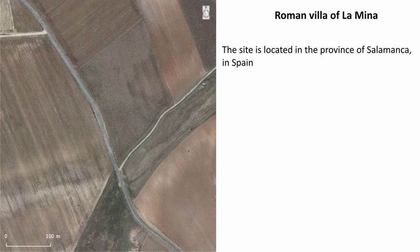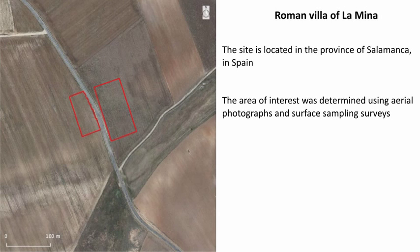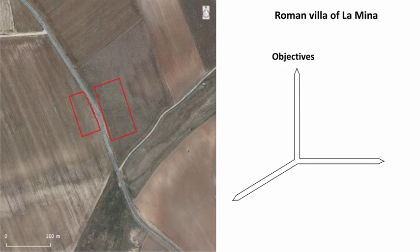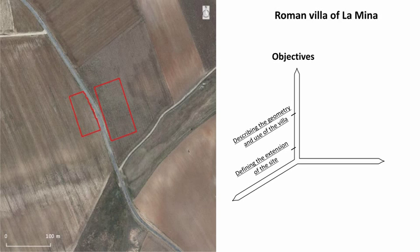The Roman Villa of La Mina is located in the province of Salamanca in Spain. The area of interest was determined using aerial photographs and surface sampling surveys. The main objectives of the project were defining the extension of the site, describing the geometry and use of the villa, and describing the sequence of occupation.